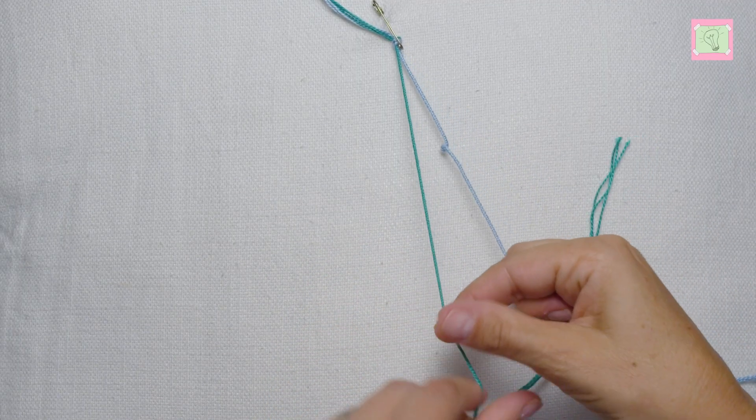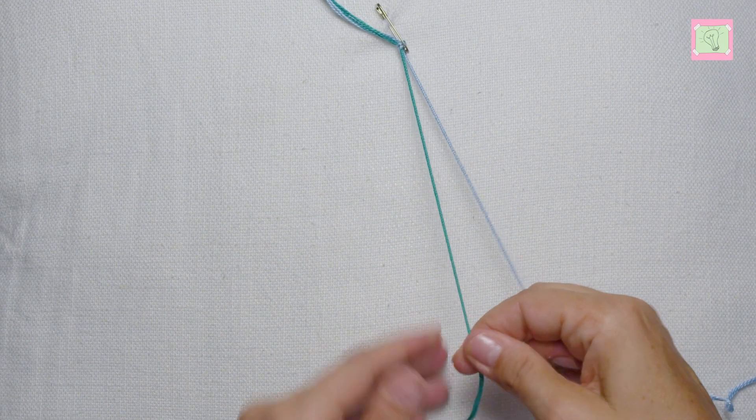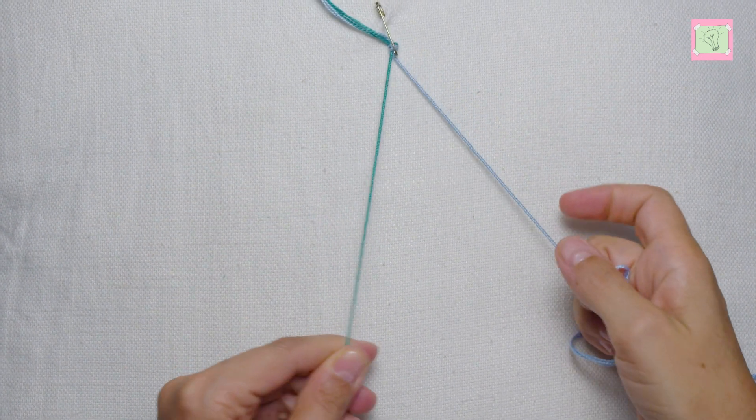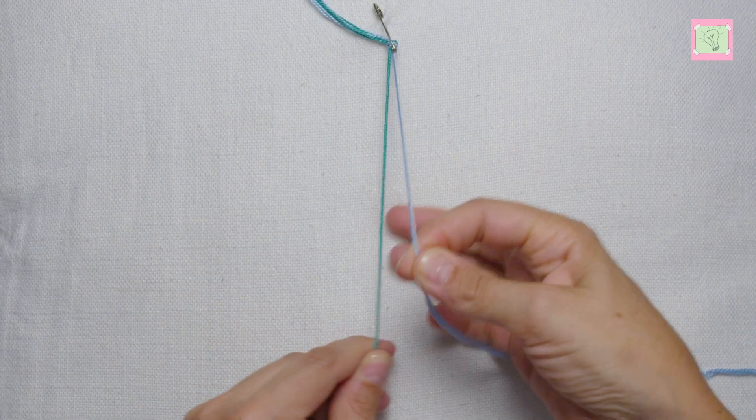When both threads are well twisted you can twist both colors together. But this time in the other direction. So I twist both my colors to the left.